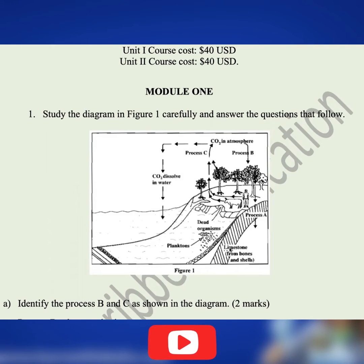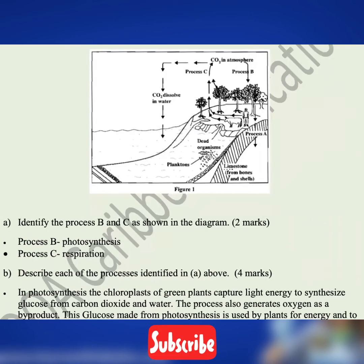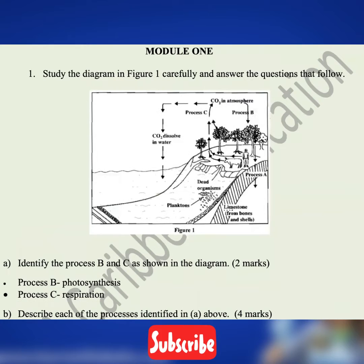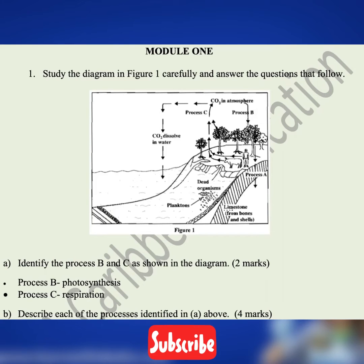What is figure one? It's the carbon cycle. Part A says we should identify the processes B and C as shown in the diagram. Let's identify B — the arrow is pointing down, going into these trees here. So we can say that process B is photosynthesis.